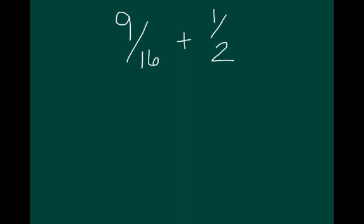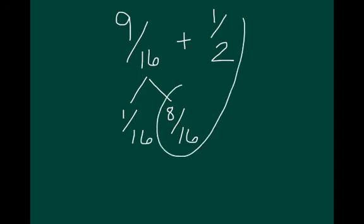One more. 9 sixteenths plus 1 half. Now, 1 half. Sixteenths. I know 8 out of 16 is 1 half. And 8 sixteenths plus 1 sixteenth gets me 9 sixteenths. 1 and 1 sixteenth.